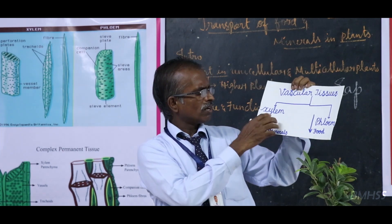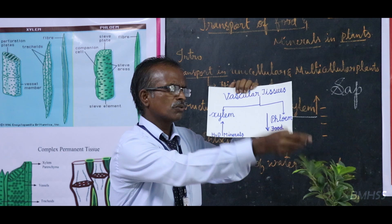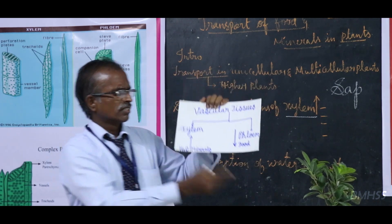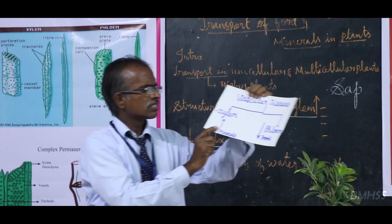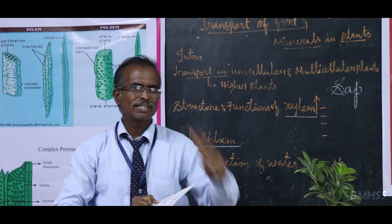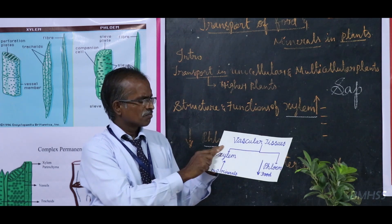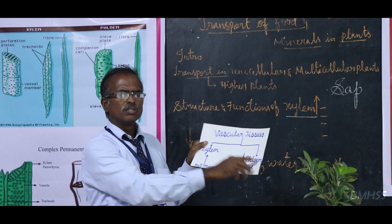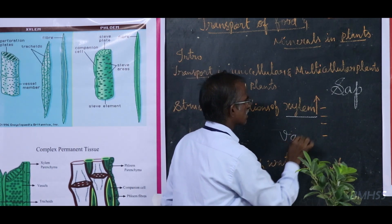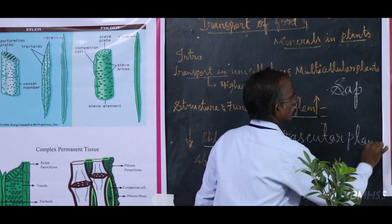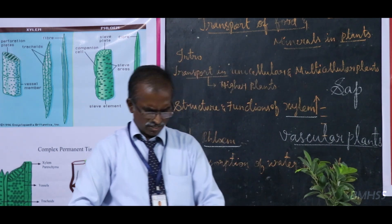There are two directional arrows marked: the downward arrow means food is transported from the leaves downward, and the upward arrow means roots absorb water from the soil and it goes up to the tip of the plant. These are xylem vessels. There are two important aspects of transport in higher plants: transportation of water and minerals by means of xylem, and transportation of food by means of phloem. Plants that have both xylem and phloem are called vascular plants.